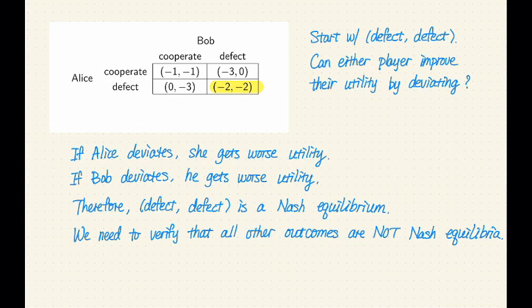So we can start with defect, defect. To verify that it is a Nash equilibrium, we have to ask ourselves this question: Can either player improve their utility by deviating to another action?